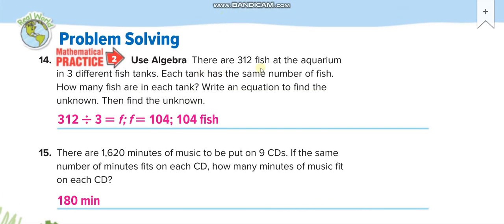There are 312 fish at the aquarium in three different fish tanks. So 312 divided by 3 is 104. 104 fish in each tank.